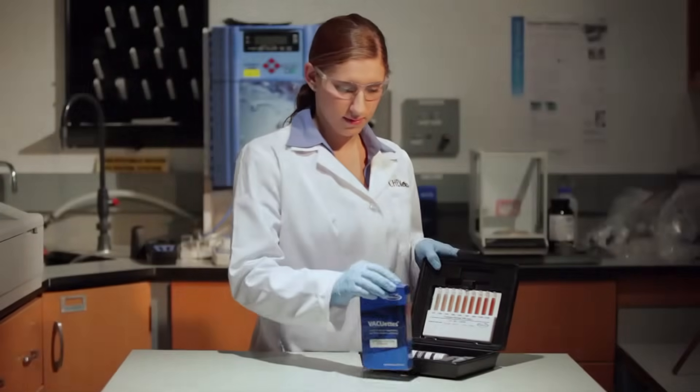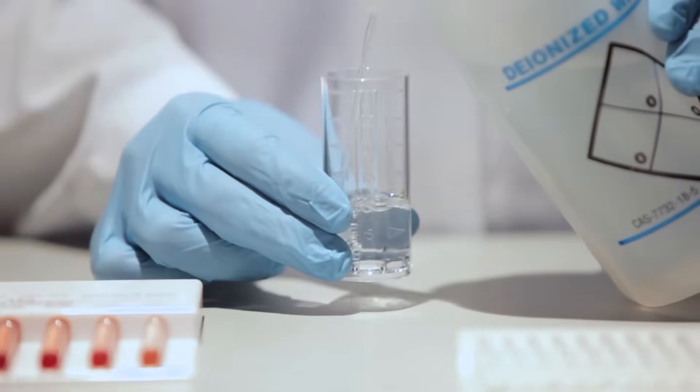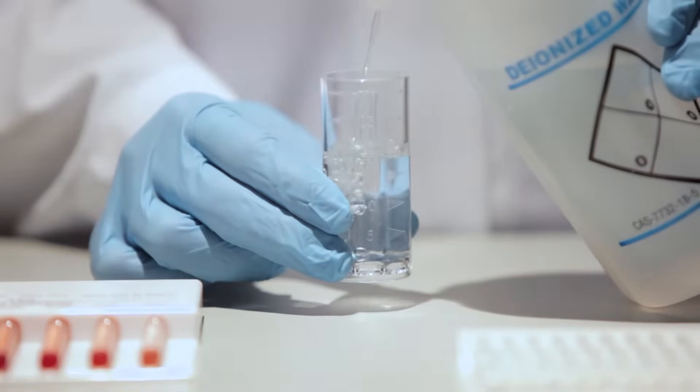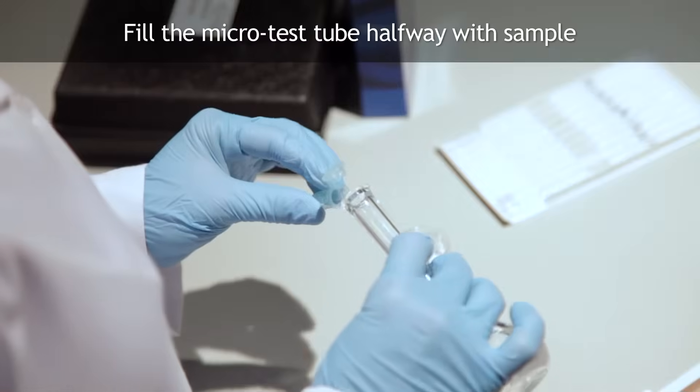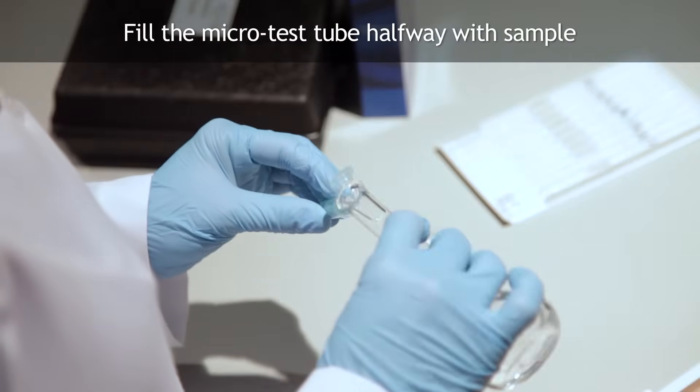To perform a test using VACUETS, fill the diluter snapper cup to the milliliter mark with purified water such as distilled or deionized water. Fill the microtest tube approximately halfway with the sample to be tested.